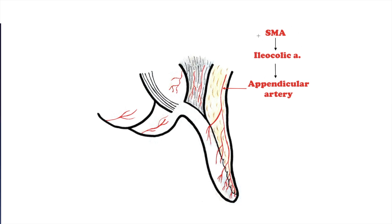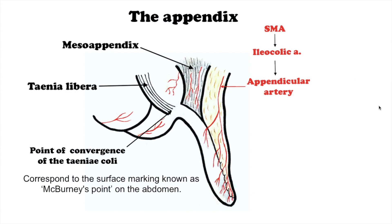It is not clear whether the appendix serves any useful purpose in humans. Suspected functions include housing and cultivating beneficial gut flora and serving a possible role in immune function during the first three decades of life, by exposing leukocytes to antigens in the gastrointestinal tract, thereby stimulating antibody production that may help modulate immune reactions in the gut.